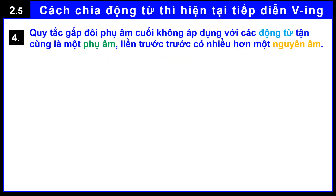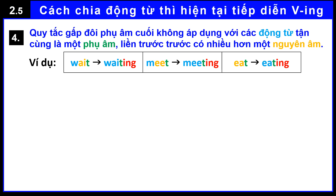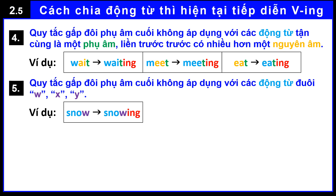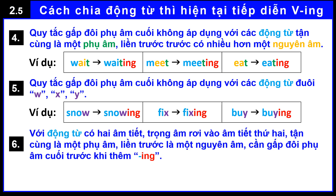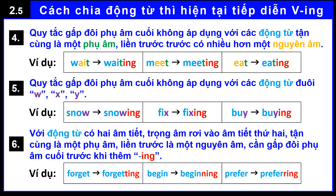Rule 4 — for example: wait → waiting, meet → meeting, eat → eating. Rule 5 — for example: snow → snowing, fix → fixing, buy → buying. Rule 6 — for example: forget → forgetting, begin → beginning, prefer → preferring.